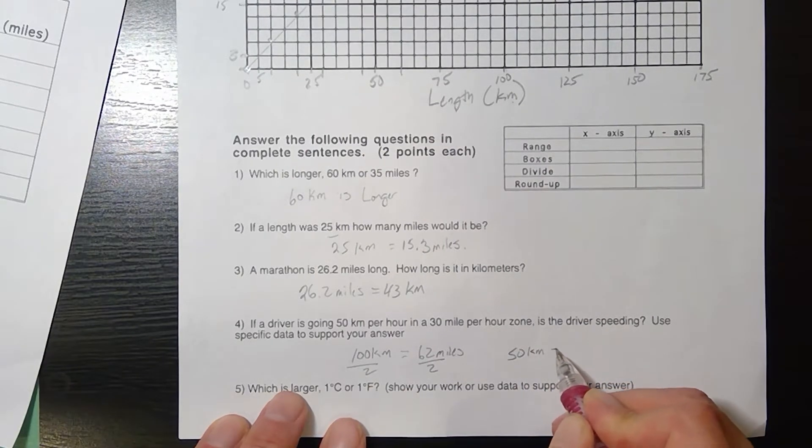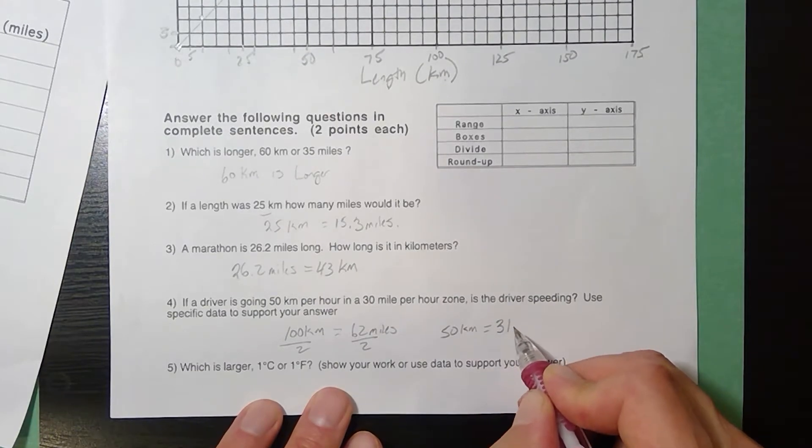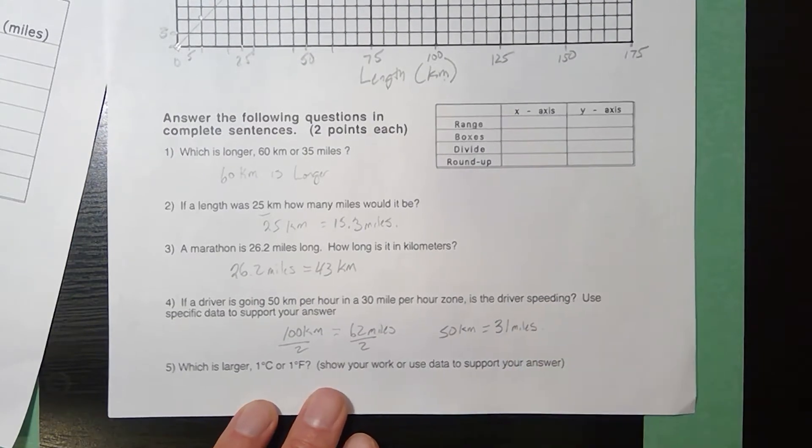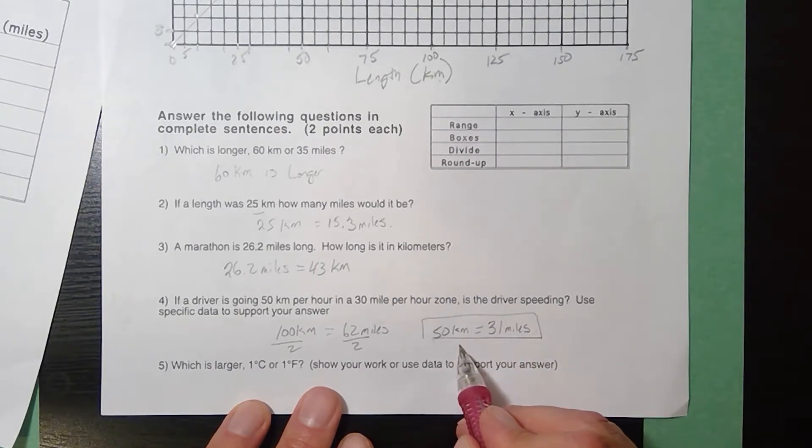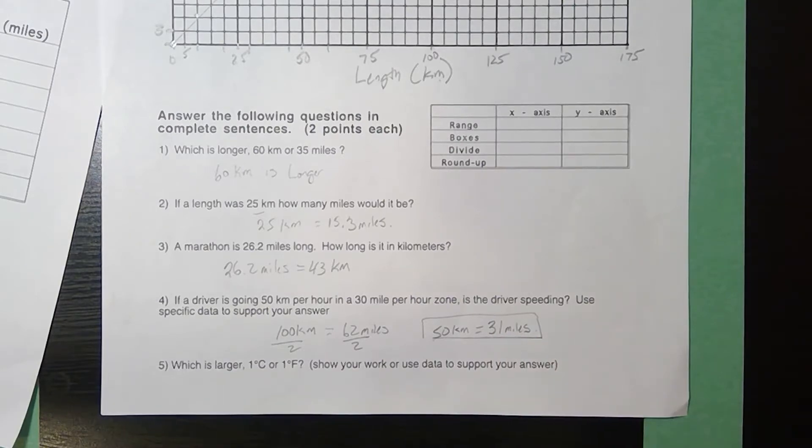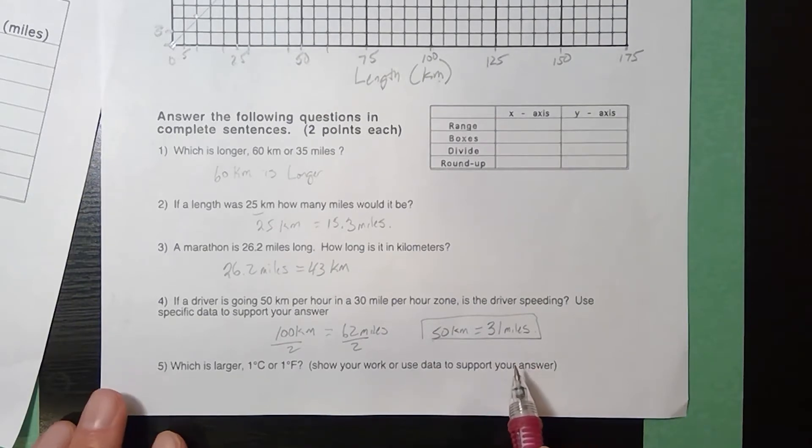So if you were actually going 50 kilometers per hour, you'd be traveling 31 miles per hour, you would be speeding. But I seriously doubt if you would get pulled over because you're only going one mile per hour over the limit.